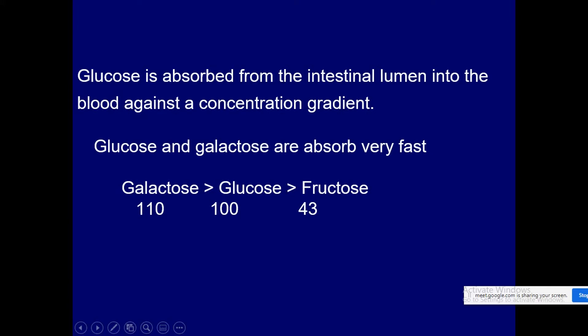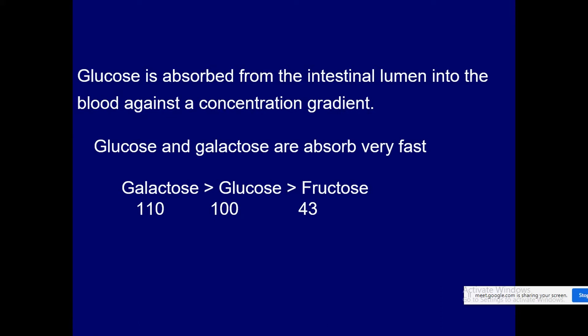After digestion, glucose is the monosaccharide released into the intestinal lumen and is absorbed into the blood through intestinal cells against a concentration gradient. In the lumen of the intestine, galactose, glucose, and fructose are the monosaccharides present. Regarding the rate of absorption or affinity for absorption, galactose has the highest affinity, followed by glucose, and then fructose. So galactose is absorbed most rapidly.